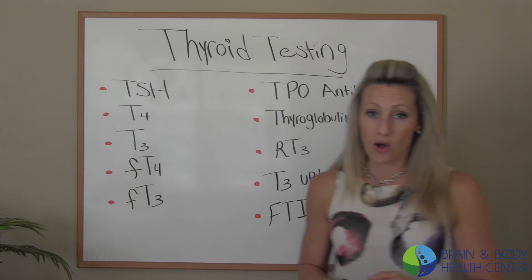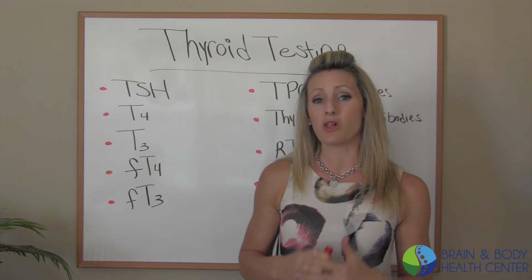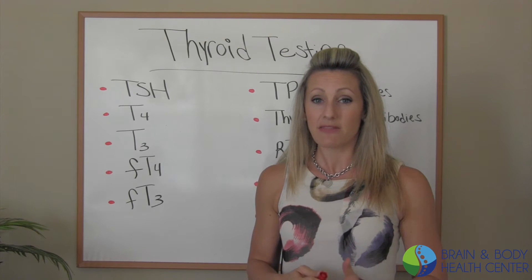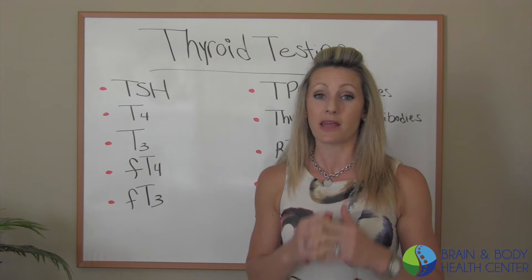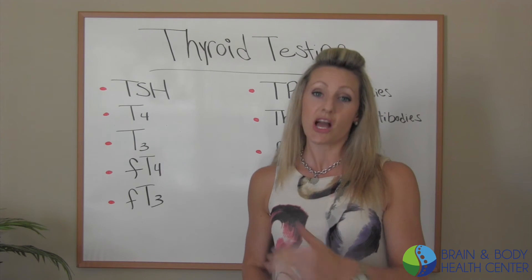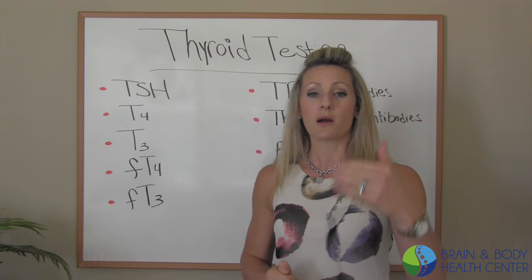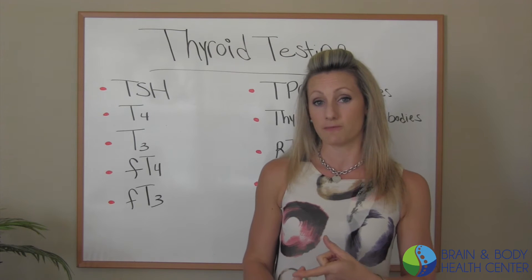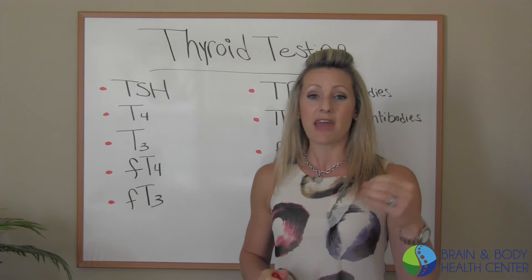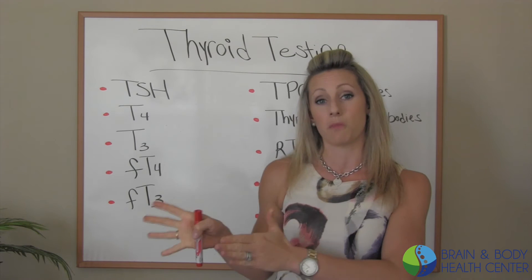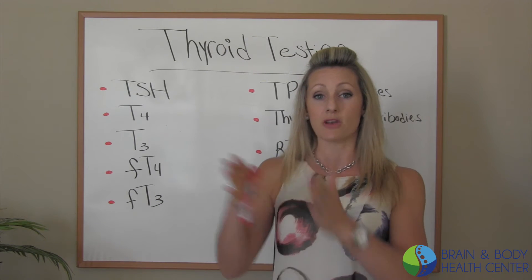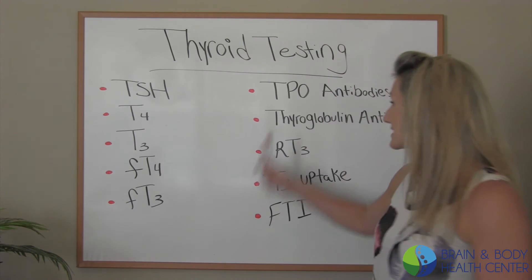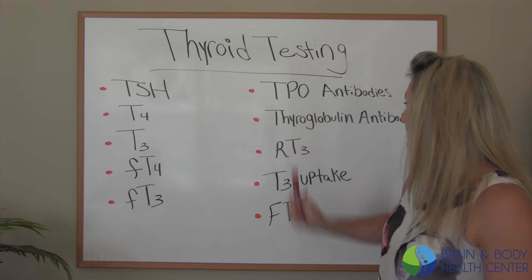We also want to know antibodies, because a lot of people in this country have autoimmunity to their thyroid. It is actually estimated that almost 85% of people who have hypothyroid symptoms actually have Hashimoto's thyroiditis — an autoimmune condition where your immune system is turning on your own thyroid tissue and creating that dysfunction. So we want to see, do you have antibodies to your thyroid tissue? We want to be testing the TPO antibodies and the thyroid globulin antibodies.